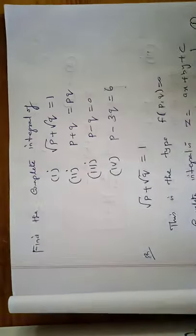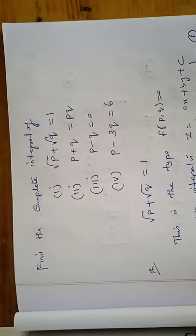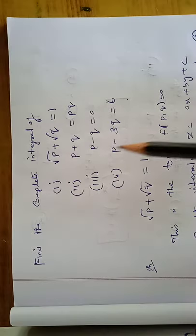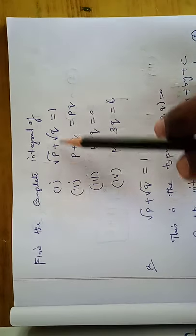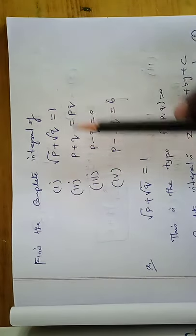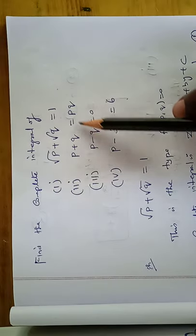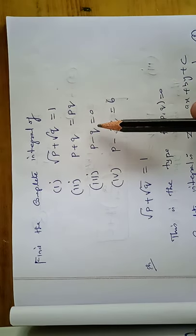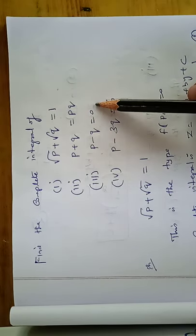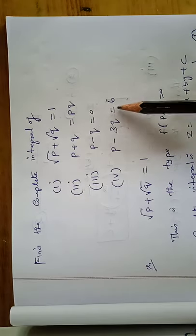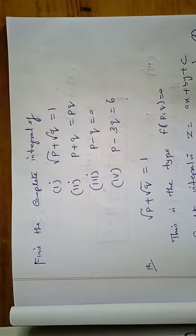We have discussed four problems on complete integrals. Find the complete integral of: first, root p plus root q equal to 1; second, p plus q equal to pq; third, p minus q equal to 0; fourth, p minus 3q equal to 6.